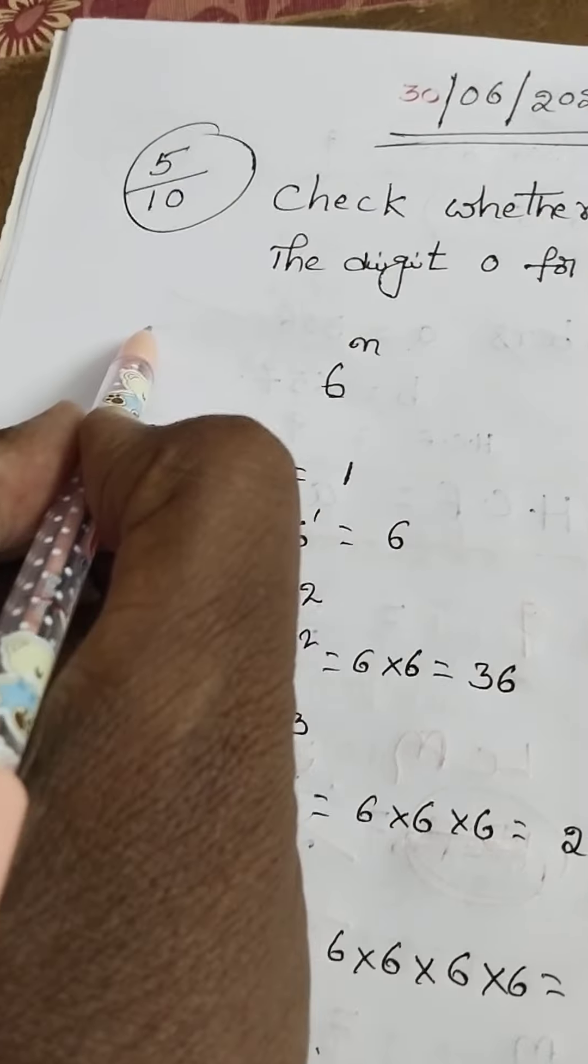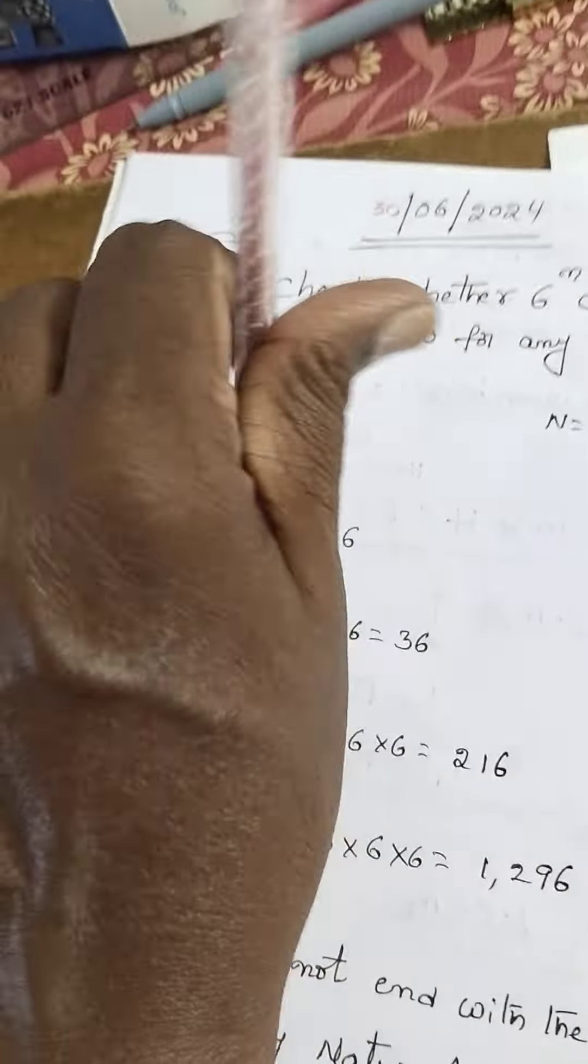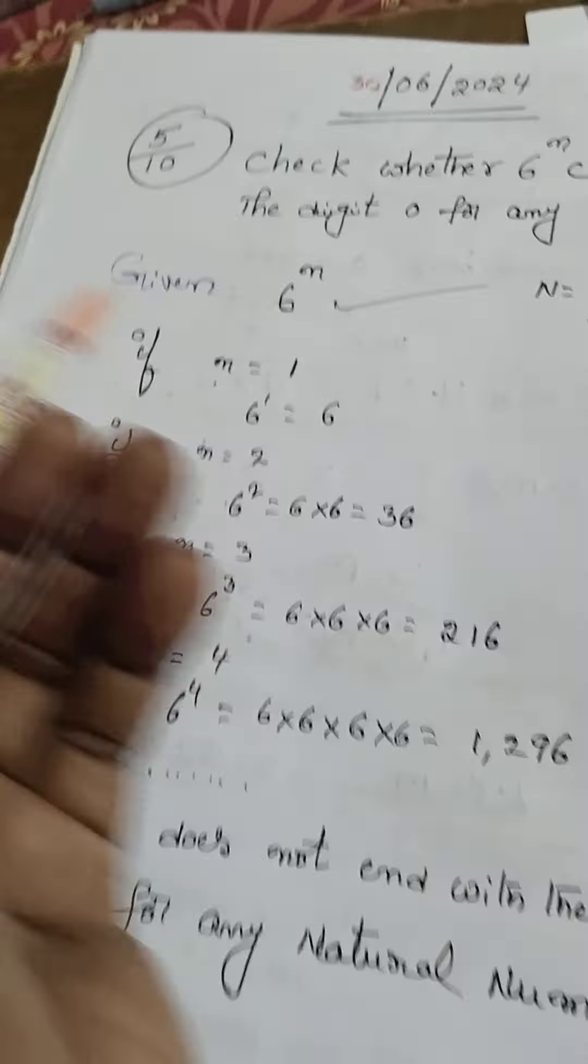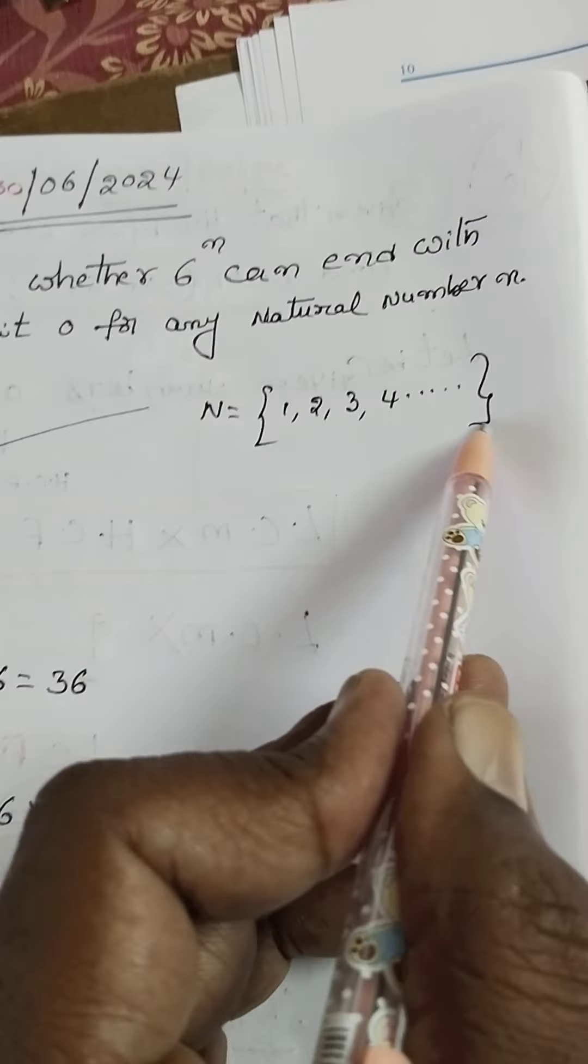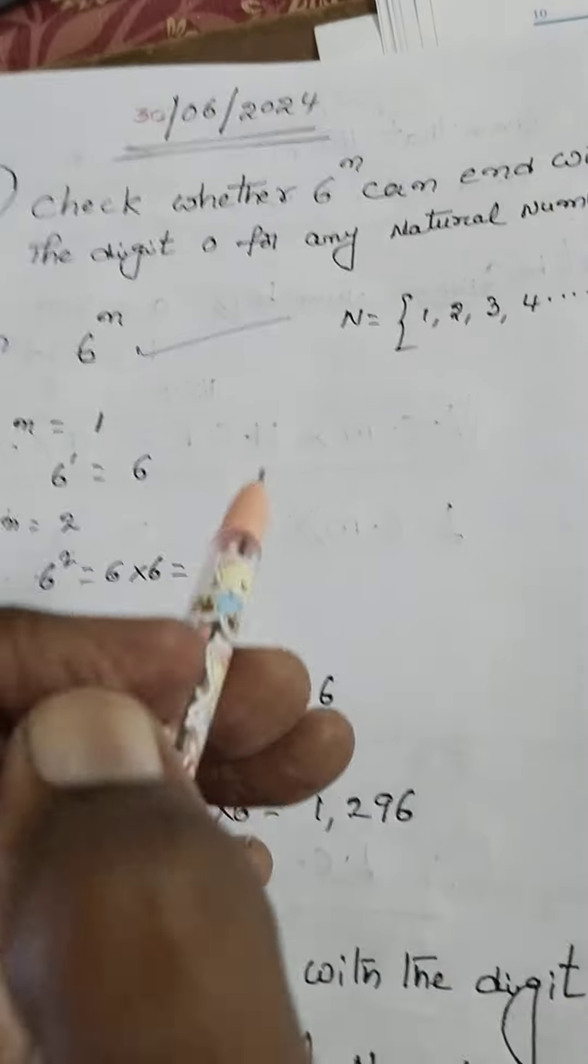So, we're given 6. First, write 'given'. Given: 6 power n, where n is a natural number - 1, 2, or any numbers. We'll take separate examples.